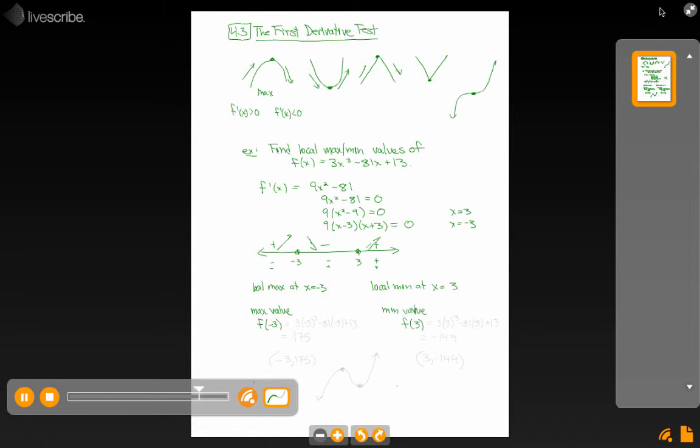So f of negative 3 is going to be 3 times negative 3 cubed minus 81 times negative 3 plus 13. And f of 3, same idea, 3 times 3 cubed minus 81 times 3 plus 13. And the values I get for these are maximum value of 175, minimum value of negative 149.